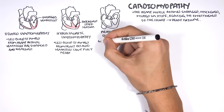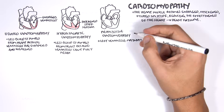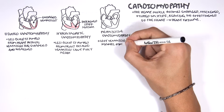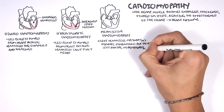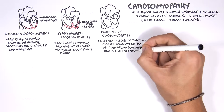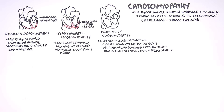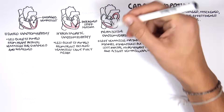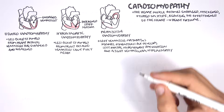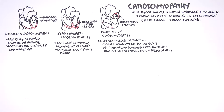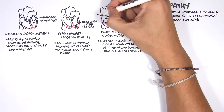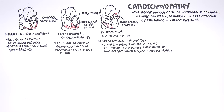Restrictive cardiomyopathy is when the left ventricle maintains normal dimensions, but we develop left atrial hypertrophy and dilation, and right ventricular hypertrophy as a result. We have hypertrophy and dilation of the left atria, and hypertrophy of the right ventricle, because of the backflow from the left side of the heart to the right.